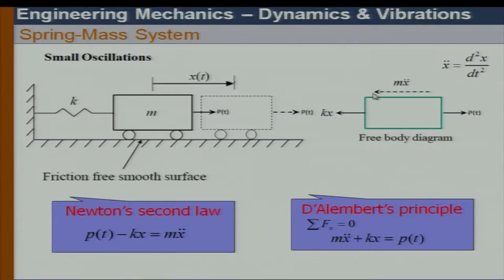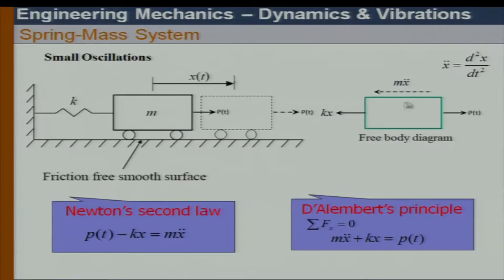P minus Kx is the resultant force along the x direction, which equals mass times acceleration. The body accelerates in the same direction. Using D'Alembert's principle, there is an inertia force Mx̄ (M times x double dot), where x is displacement and x double dot is d²x/dt². We can write D'Alembert's principle as sum of forces along x equals zero, giving the same form as Newton's second law.